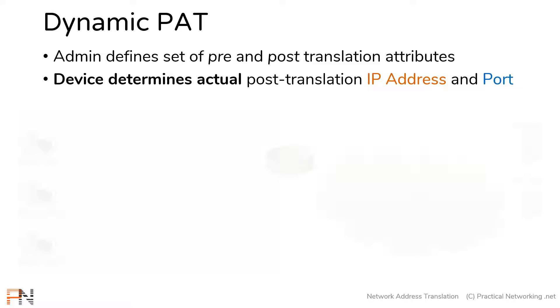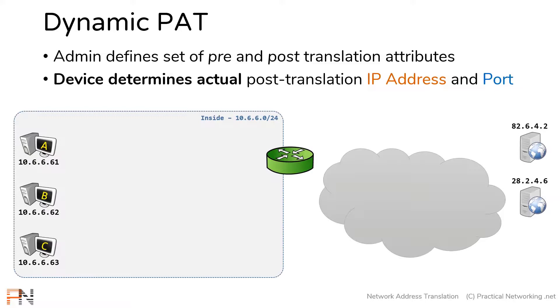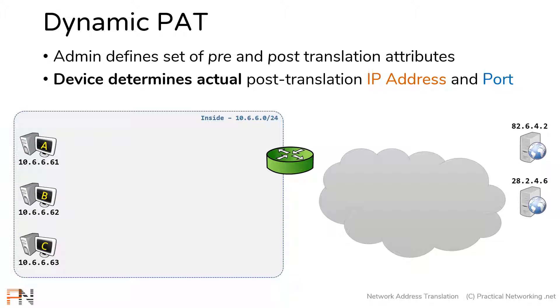Here we have a topology with three hosts on the inside, a couple of hosts on the outside, and then a router as our network address translation device. A dynamic PAT configuration would look like this.